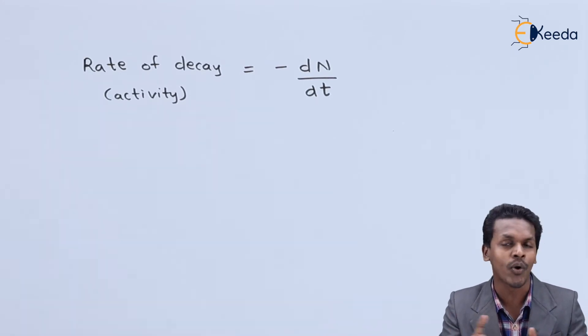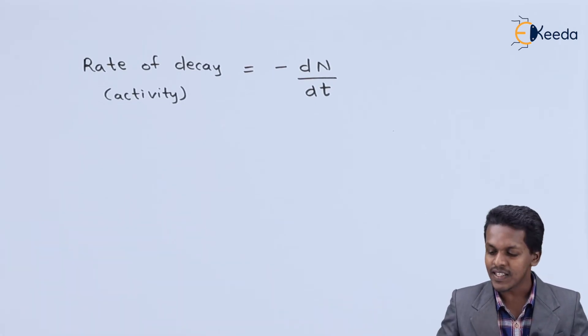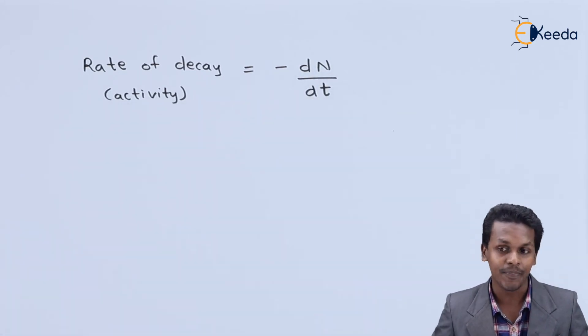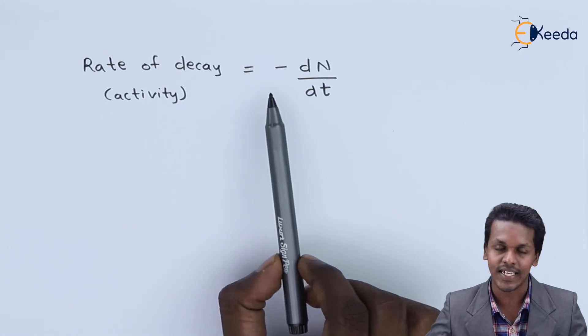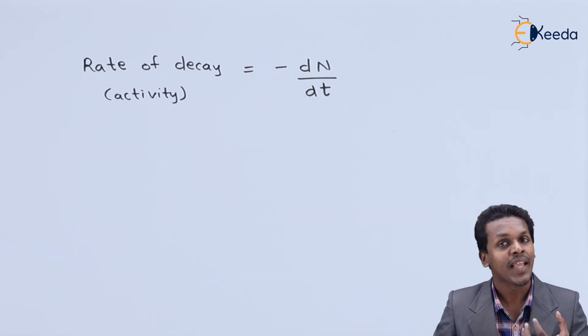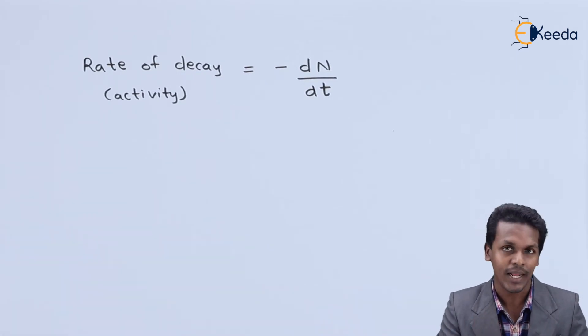It also depends upon the element or the amount of the element that we have taken initially. So this is the rate of decay, which is minus dN divided by dt. The negative sign represents that the amount of nuclei decreases with respect to time.